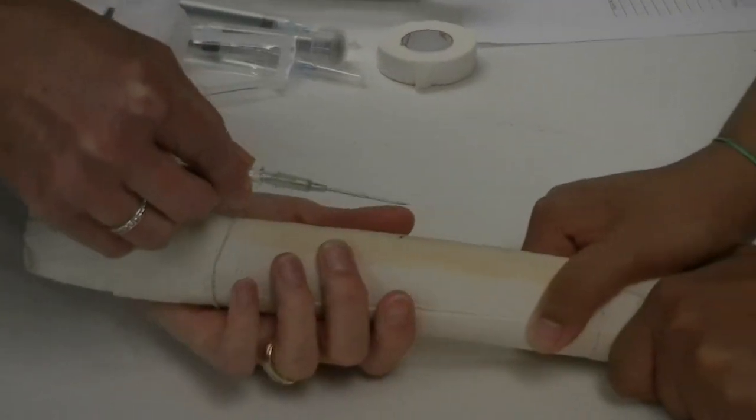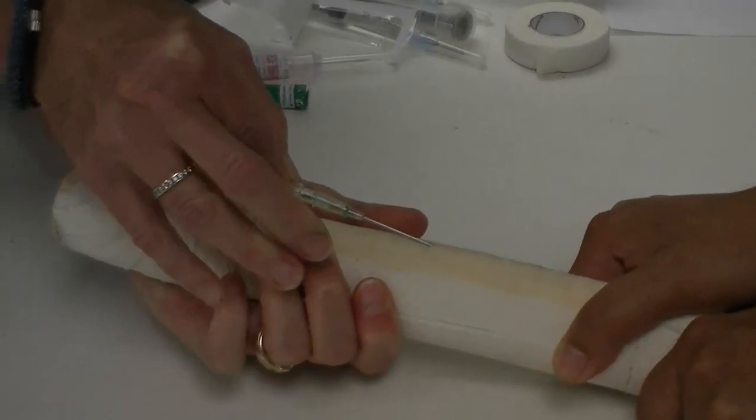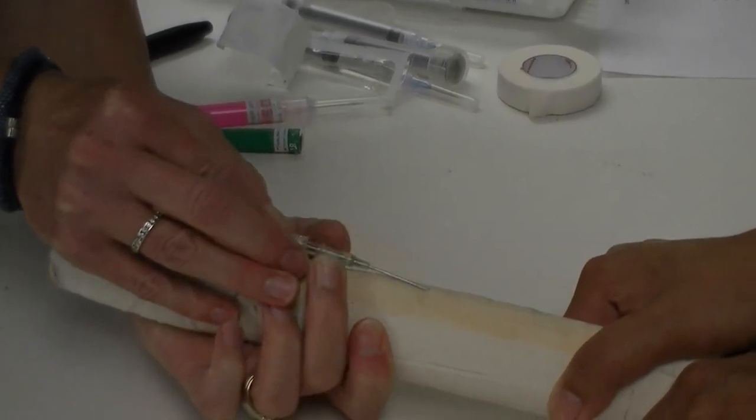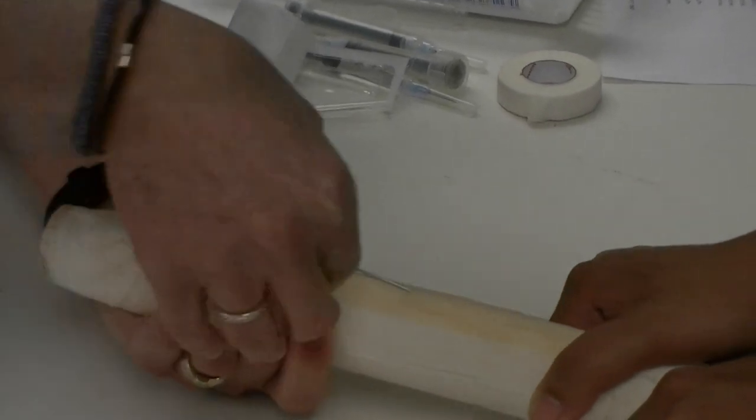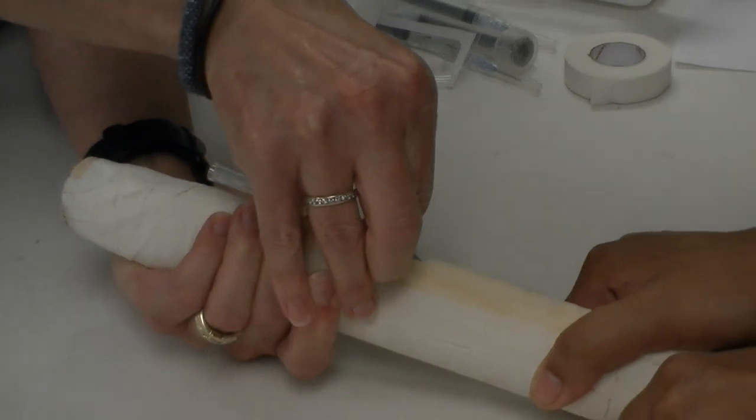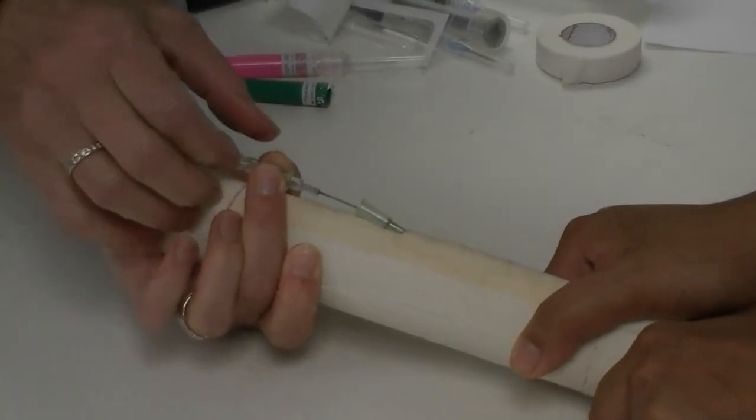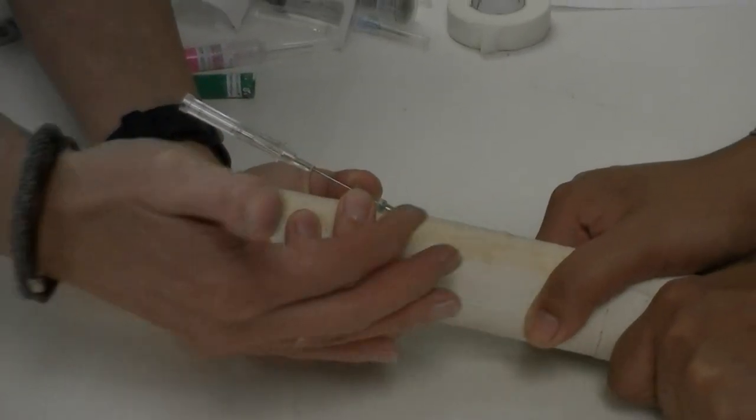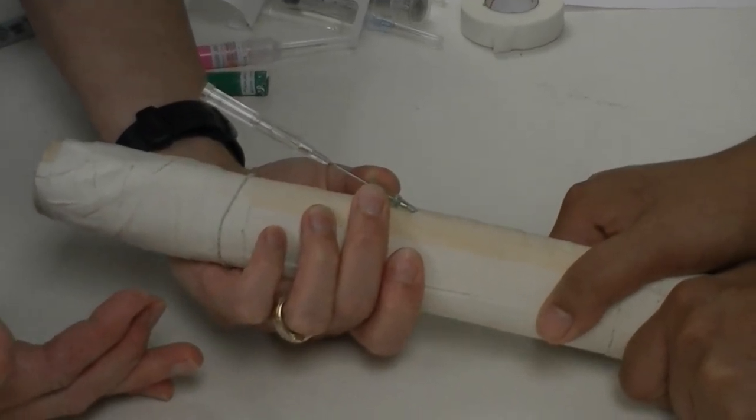All right, so we'll do that one more time. Holding the limb, getting it through the skin, finding the vein, seeing the flash, changing my hand position, pushing the catheter off the stylet all the way to the hub in the skin here.